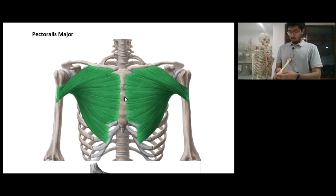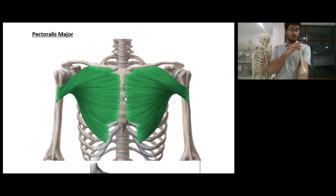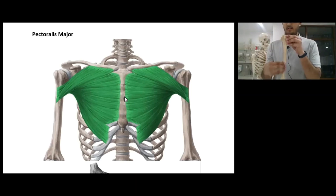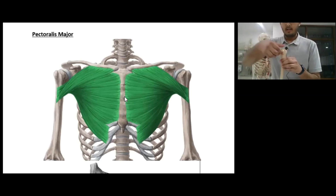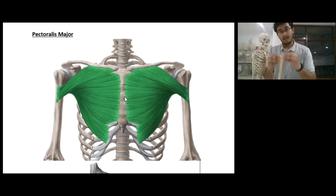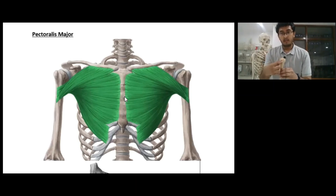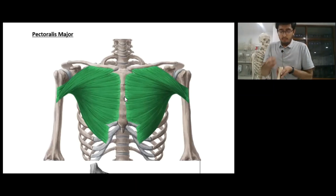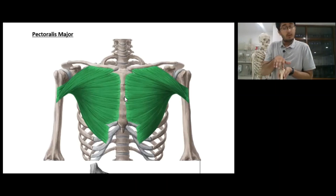Let me bring the humerus in front of you. This is the left humerus. This is the greater tubercle. This is the head, this is the shaft, this is the surgical neck, this is the anatomical neck, this is the greater tubercle — the protuberance at the lateral part — and this medial protuberance is the lesser tubercle. Between these two tubercles we have the intertubercular groove.